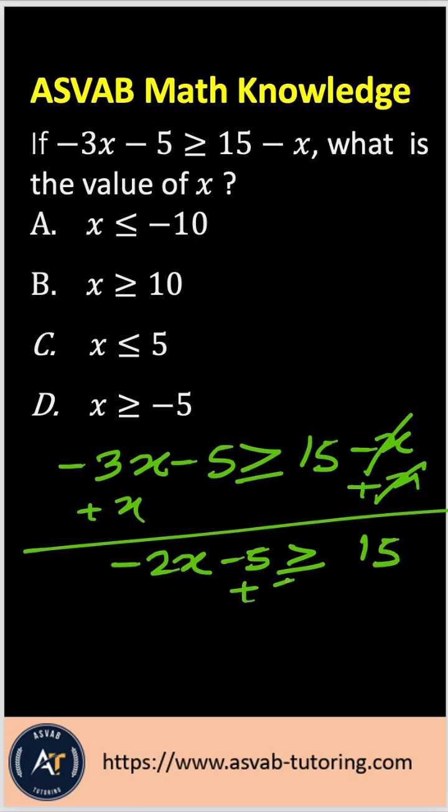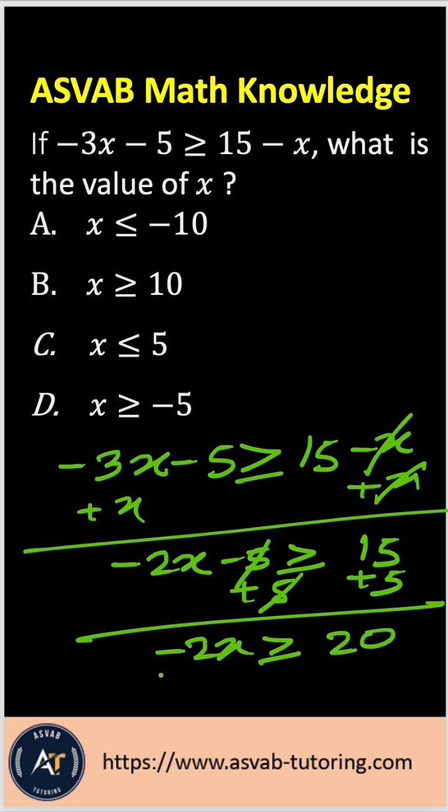Now what you need to do is add both sides by 5 to eliminate. It's the same as a regular equation. So negative 2x is greater than or equal to 20, and divide both sides by negative 2.